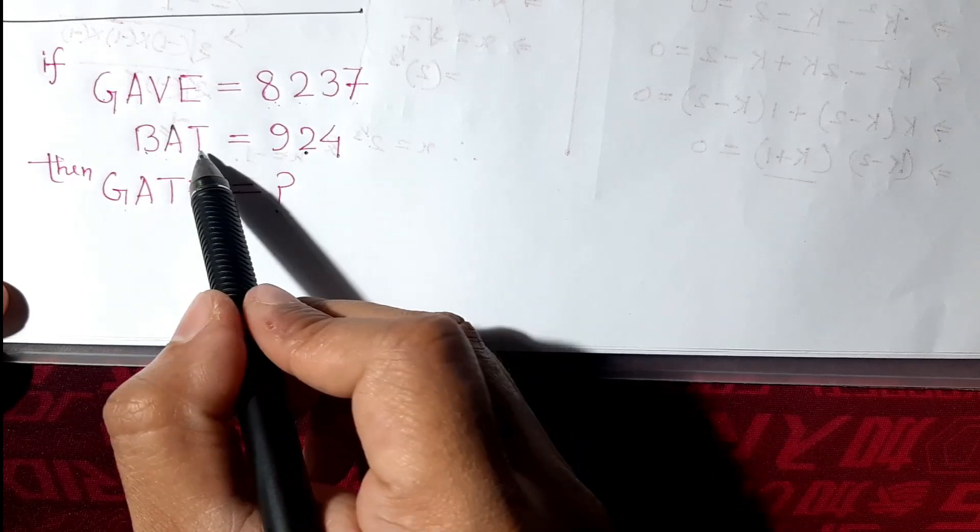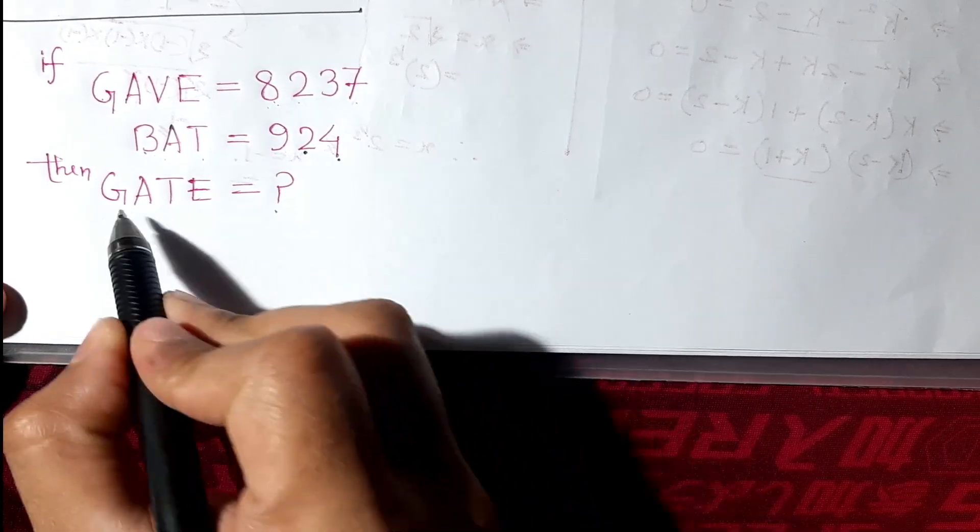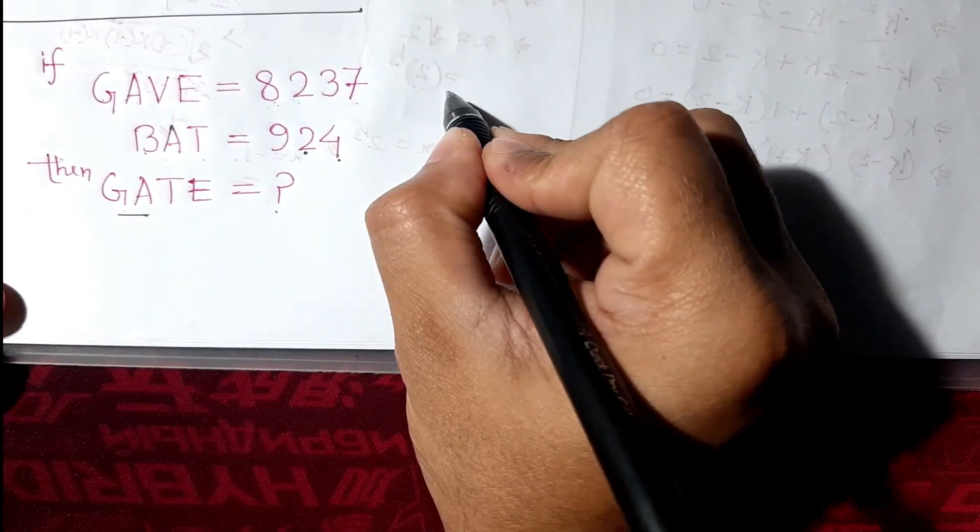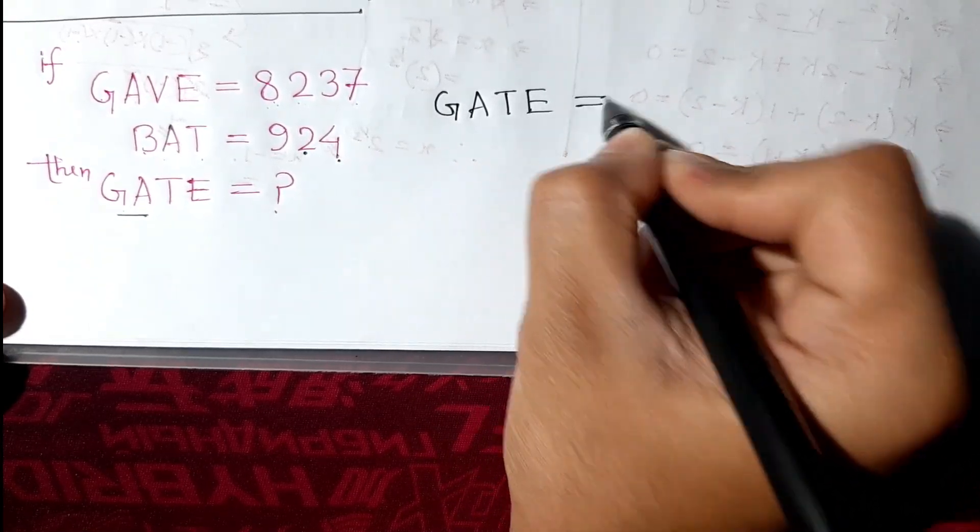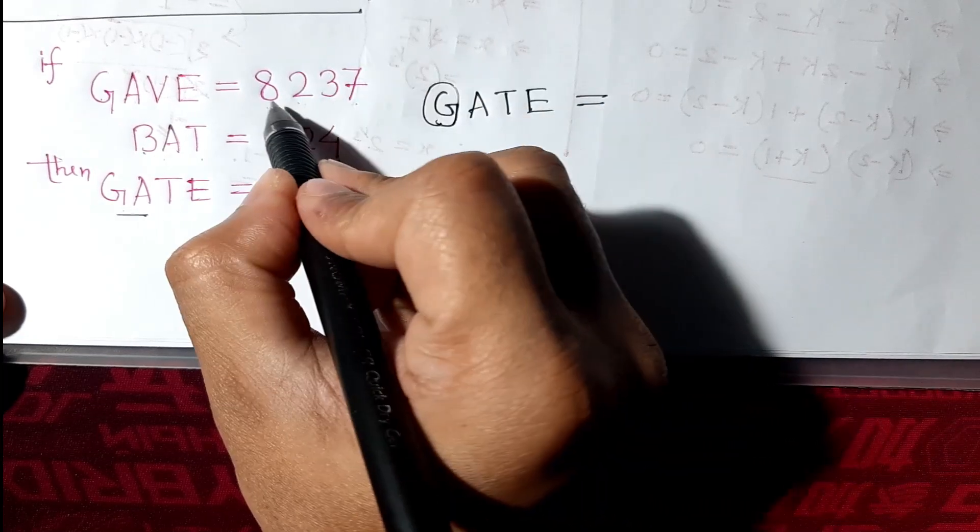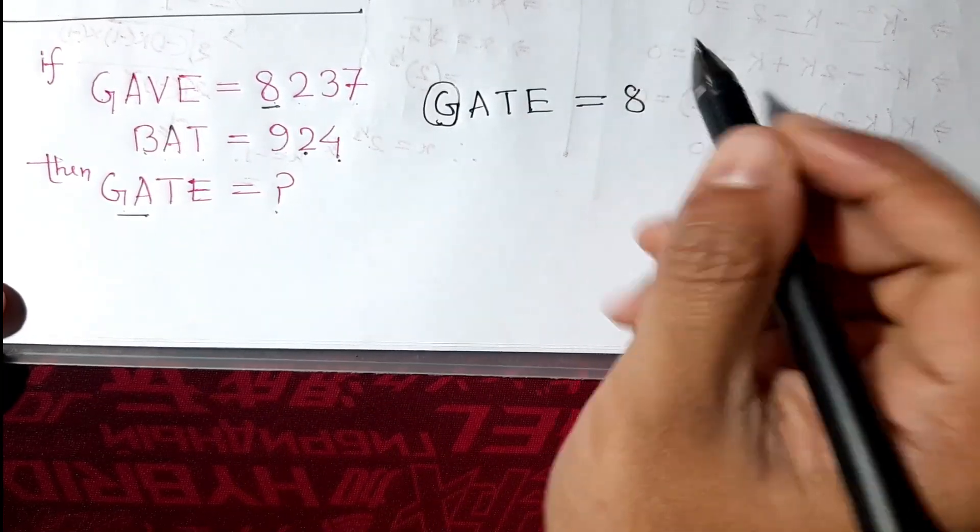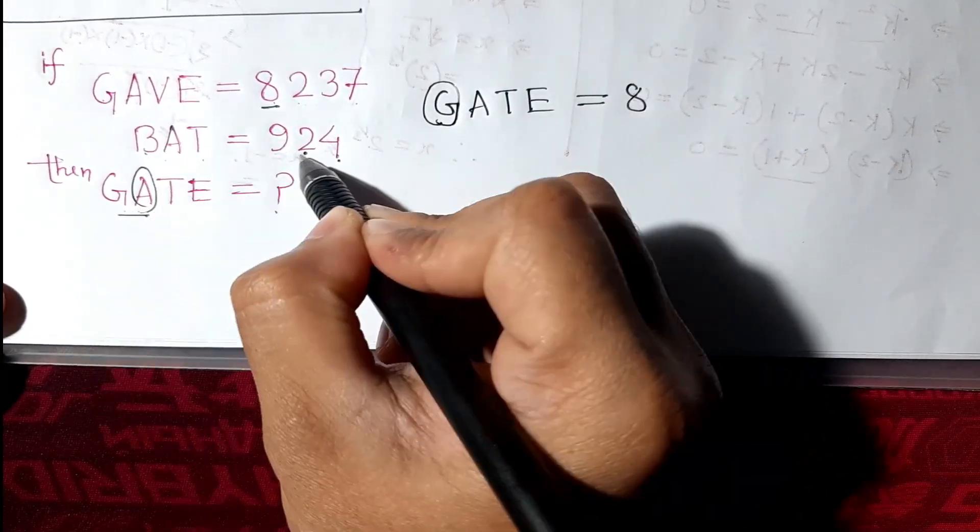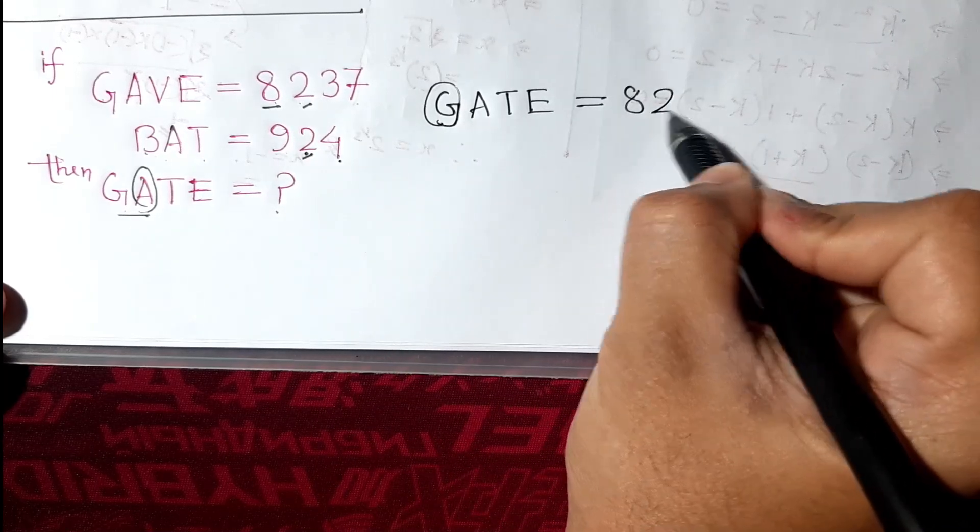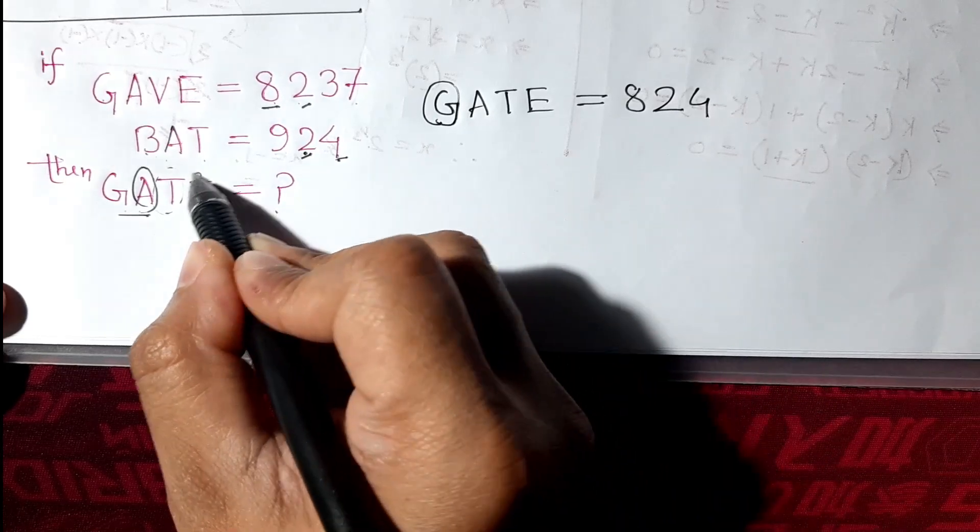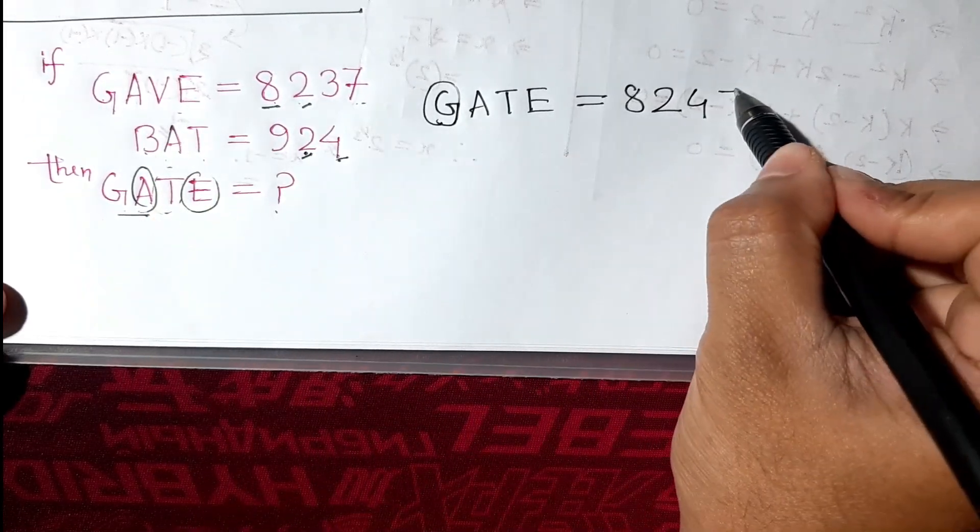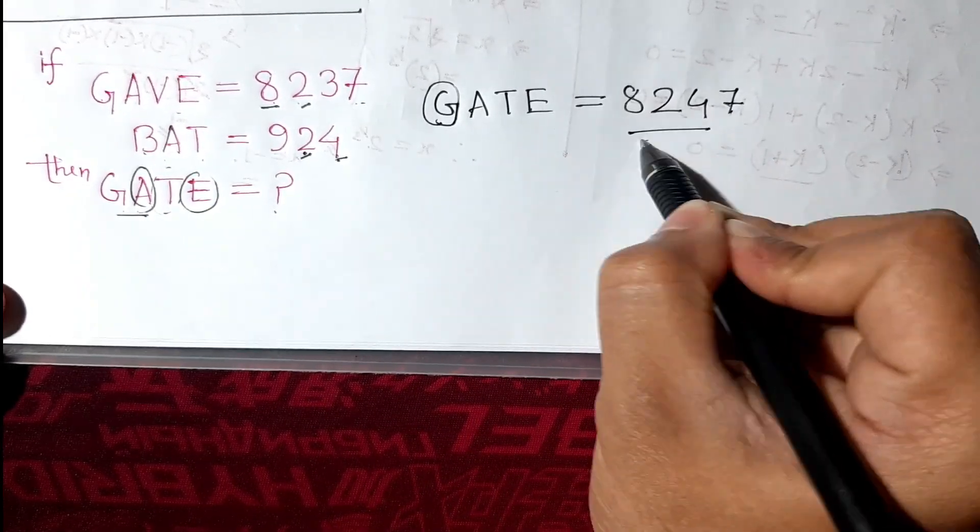So GATE. G will be, we'll write the value of G which is 8, then the value of A which is 2, then the value of T is 4, and the value of E which is 7. So the code is 8247.